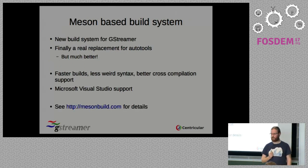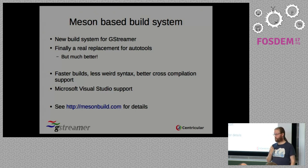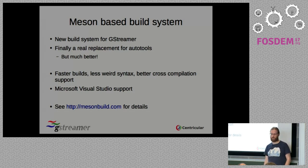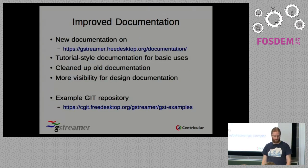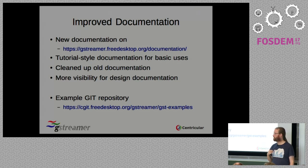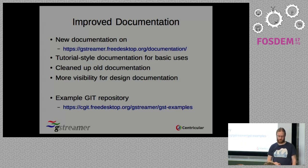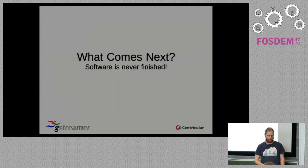We also have a new build system — currently alternative but hopefully switching soon — which is Meson. Before we were using Autotools, and everybody knows Autotools is a huge pain. Meson really does everything we need from Autotools and makes everything much simpler. The build is much faster on Linux, and on Windows it's tens of times faster. We can finally build Visual Studio binaries, which is also quite important for Windows users. Similarly, we improved our documentation a lot — there's new tutorial-style documentation and a good examples repository with a few little example applications.